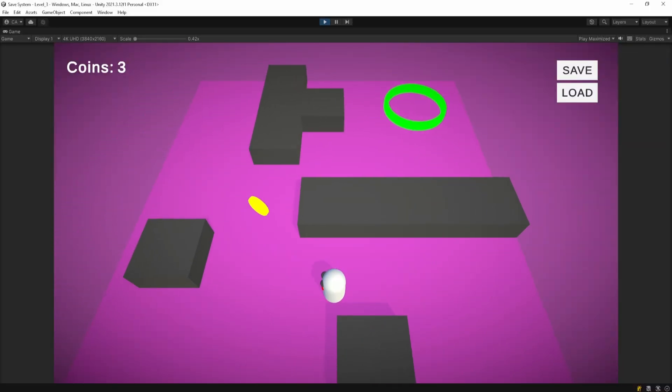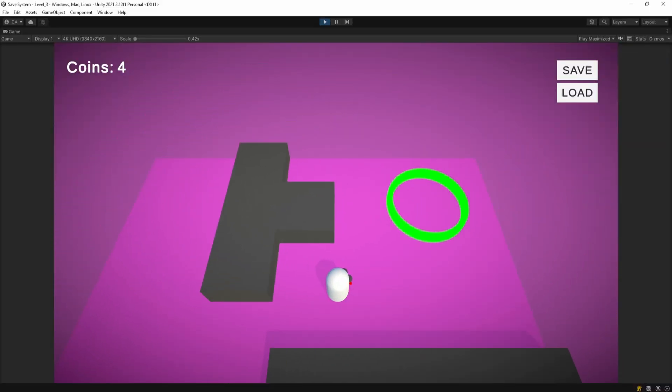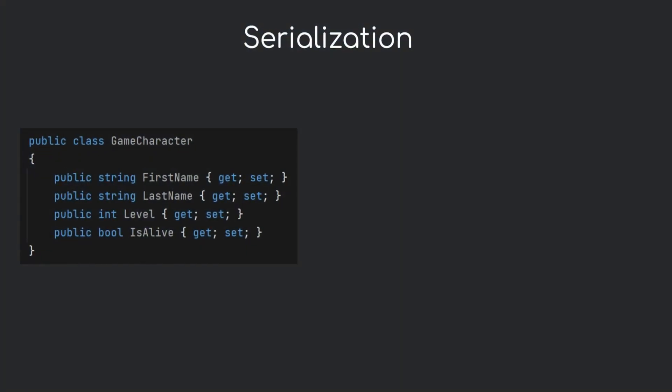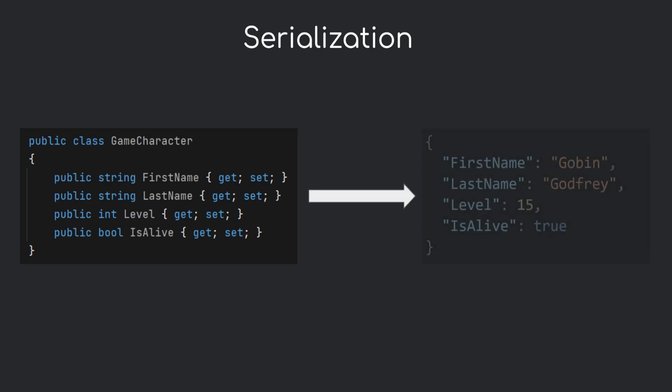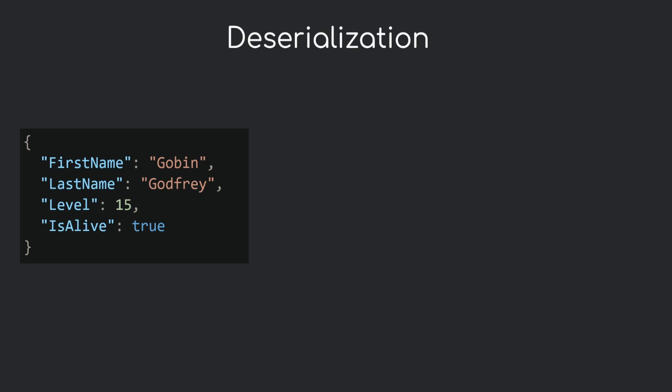Now that we know what a JSON object is, let's talk about the two main processes involved when working with JSON objects. The first one is serialization — it may sound complicated but it's actually quite simple. It just means taking a C# object's properties and converting them into a JSON format. You should also know that JSON is language independent, meaning you can use it with almost any programming language. The second process is called deserialization, which is the opposite — it means taking JSON data and converting it back to a data object.